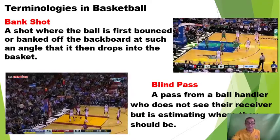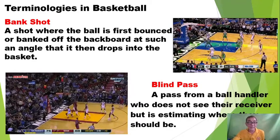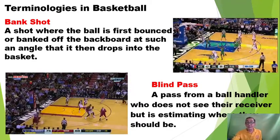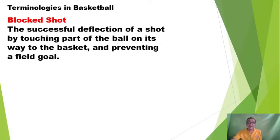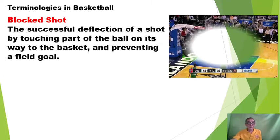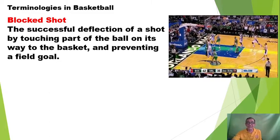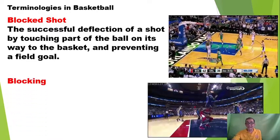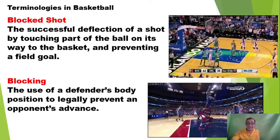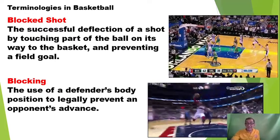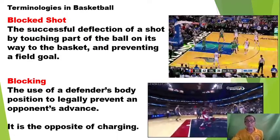If you have seen it in the video, you are not sure where the handler passed the ball to any receiver or teammate. The next one is the block shot — it is the successful deflection of a shot by touching part of the ball on its way to the basket and preventing a field goal. And then blocking — the use of a defender's body position to legally prevent an opponent's advance. Remember, this is also the opposite of what you call charging.